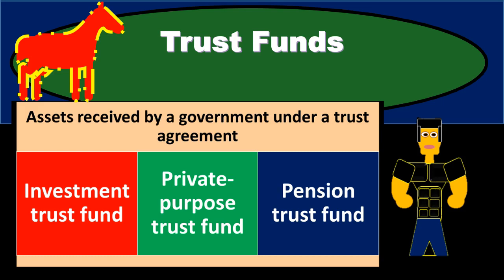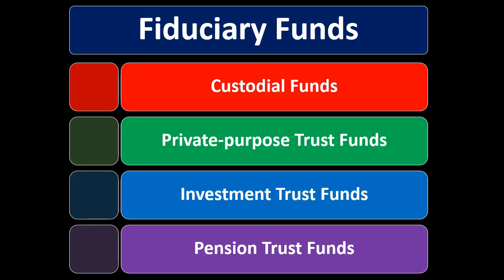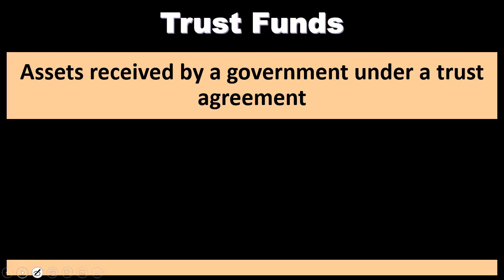In this presentation we will discuss governmental trust funds, recalling that governmental trust funds fall within the category of fiduciary type funds. There are three primary types of funds within governmental accounting: the governmental funds, which are the largest group; the proprietary funds, similar to for-profit organizations; and the fiduciary funds, which have a fiduciary component — of which the trust fund is a part. Other examples include custodial funds, private purpose trust funds, investment trust funds, and pension trust funds.